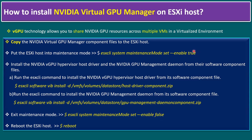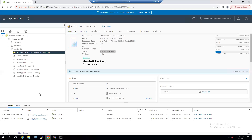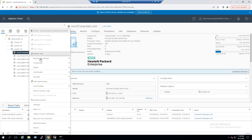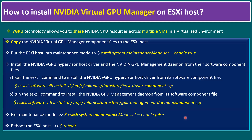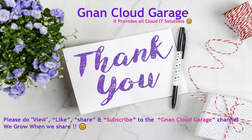To enter maintenance mode use 'true', and to exit use 'false' with the same command. Alternatively, from vCenter, right-click the ESXi host and select Maintenance Mode > Exit Maintenance Mode. That completes the installation of NVIDIA Virtual GPU Manager on an ESXi host. If you're watching this for the first time, please like, share, and subscribe to the Gnan Cloud Garage channel. Thank you, bye for now.